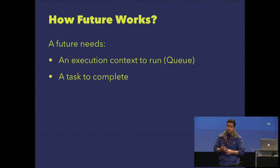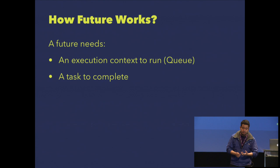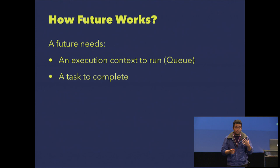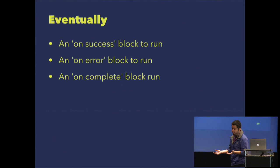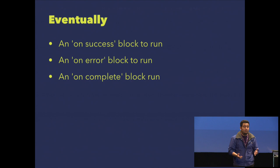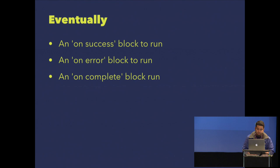How does a future work? I want to create a way to extend a result — I can chain, create success blocks and error blocks. We need an execution context — in our case, a queue — and a task. We can provide an on-success block, an on-error block, and on-complete. On-complete always runs, even if the block fails.